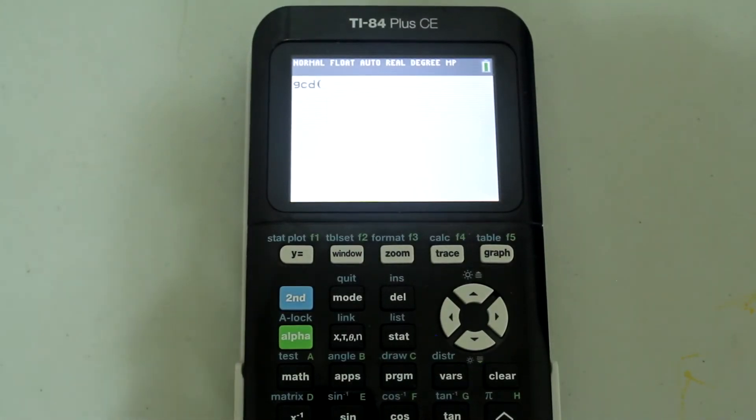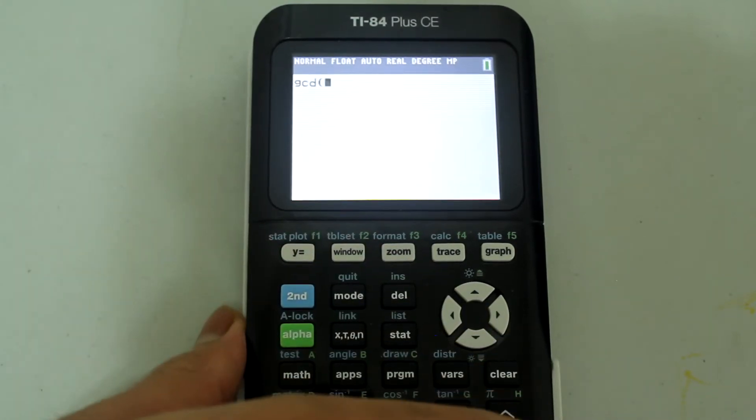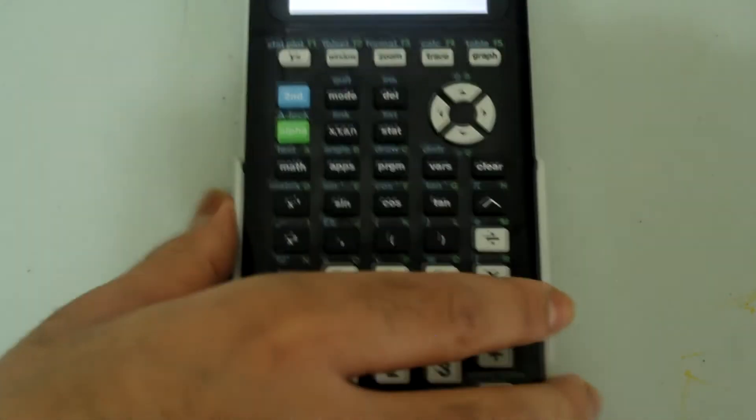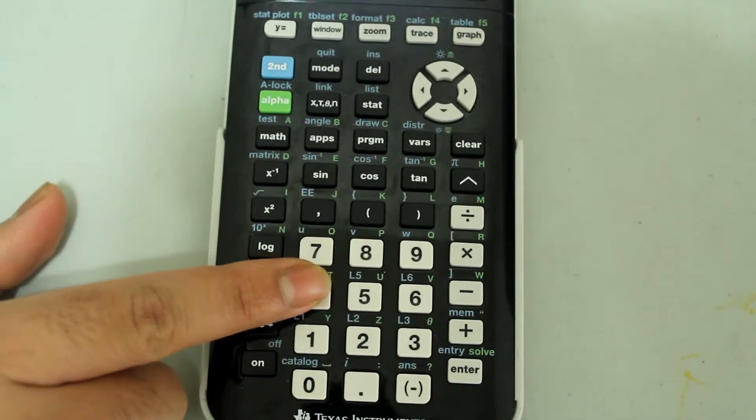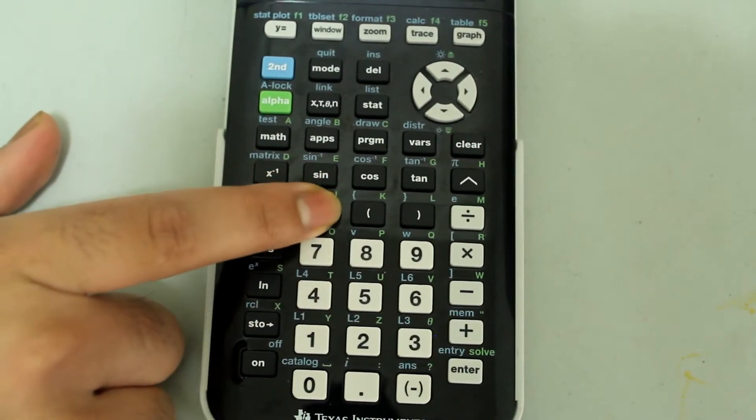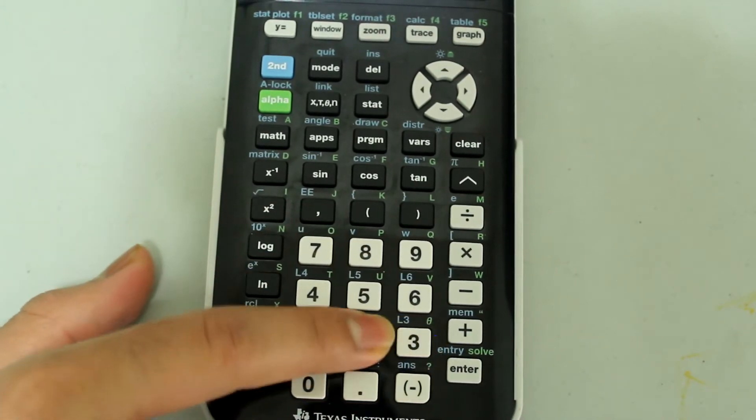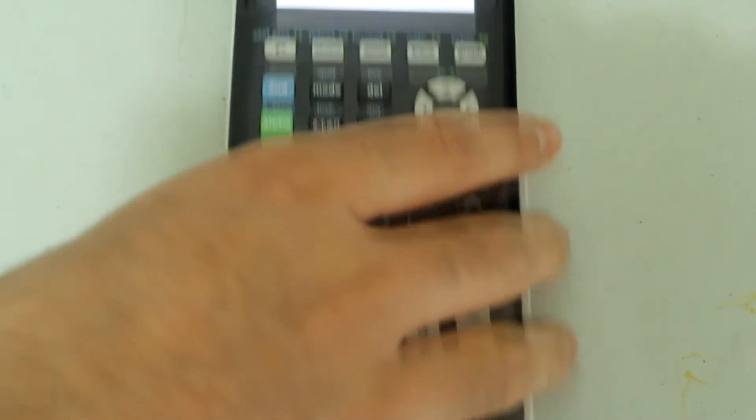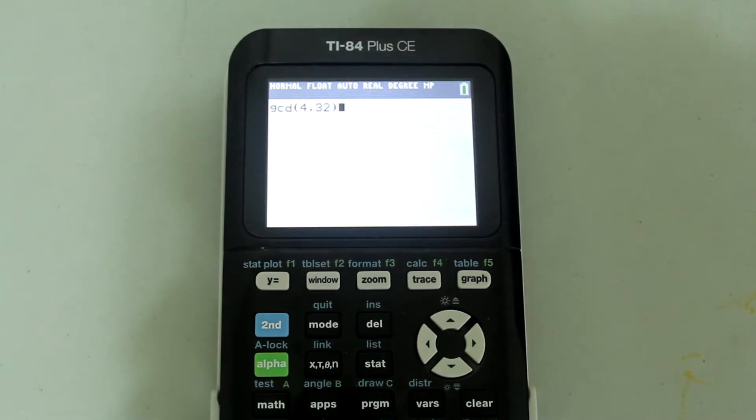Now I'm going to find the greatest common divisor for 4 and 32. Inside the closed parenthesis I'm going to have 4 comma 32, or I could also have 32 comma 4 - the order would not matter. So I'm going to type in 4 comma 32 and then close the parenthesis. So the entry looks like this.